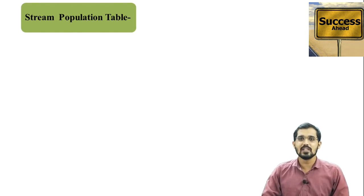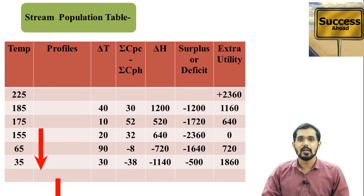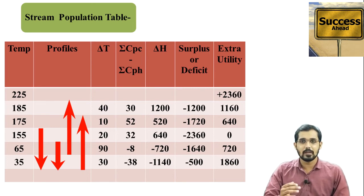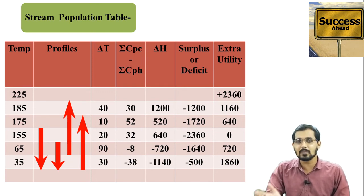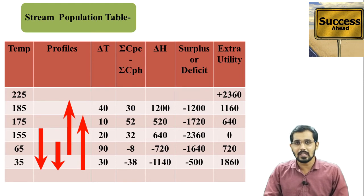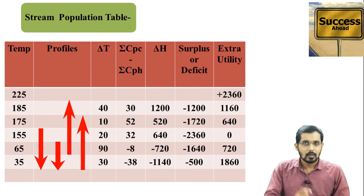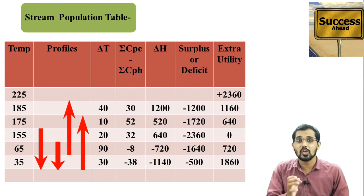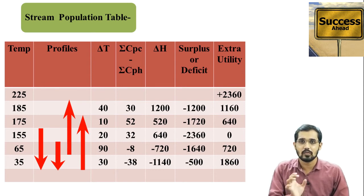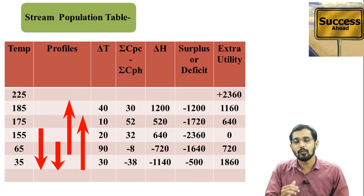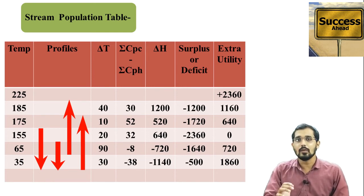Now let's look at the stream population table, which we solved in the last lecture. In this lecture, I've explained all the steps for how to write them in an exam. To quickly revise: first, we identified all hot streams and cold streams. Then we calculated the adjusted temperature, added it to the cold stream, and removed it from the hot stream to get the shifted temperature. In the table, those shifted temperature values are written in decreasing order in the first column.